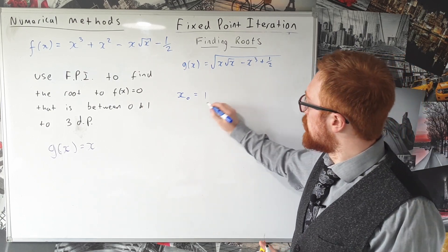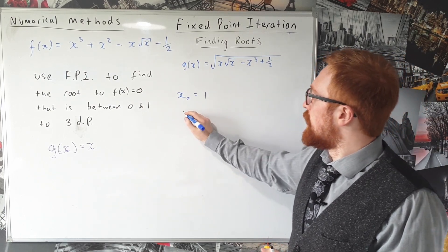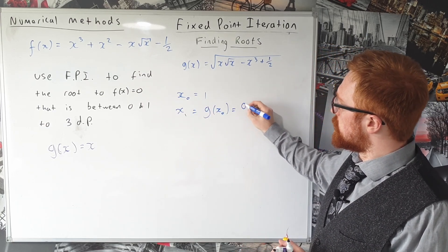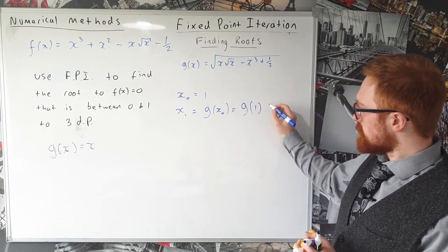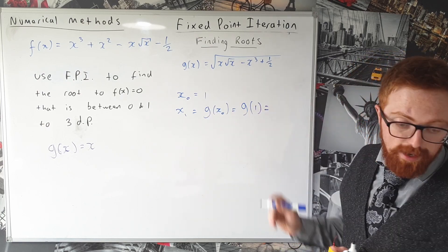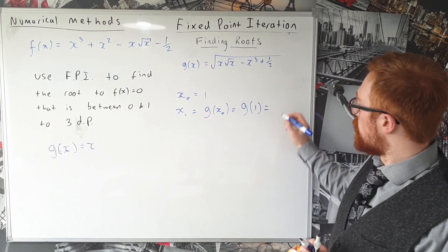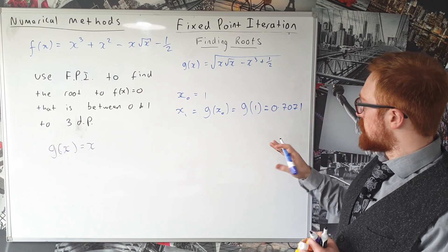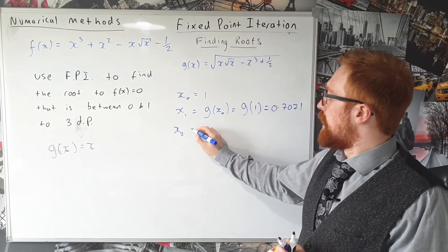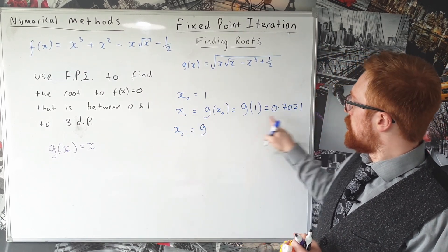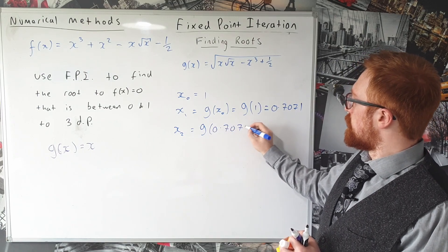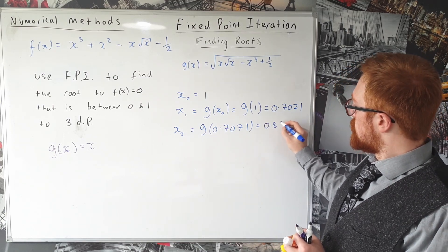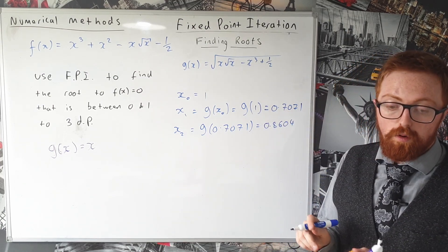Now if I type that into my calculator, what I need to do is x₁ equals g(x₀), which is g of this number here, one. If I type that into my calculator I get 0.7071. OK, so then to work out what x₂ is, we work out g(x₁), which is this 0.7071, which gives me 0.8604.